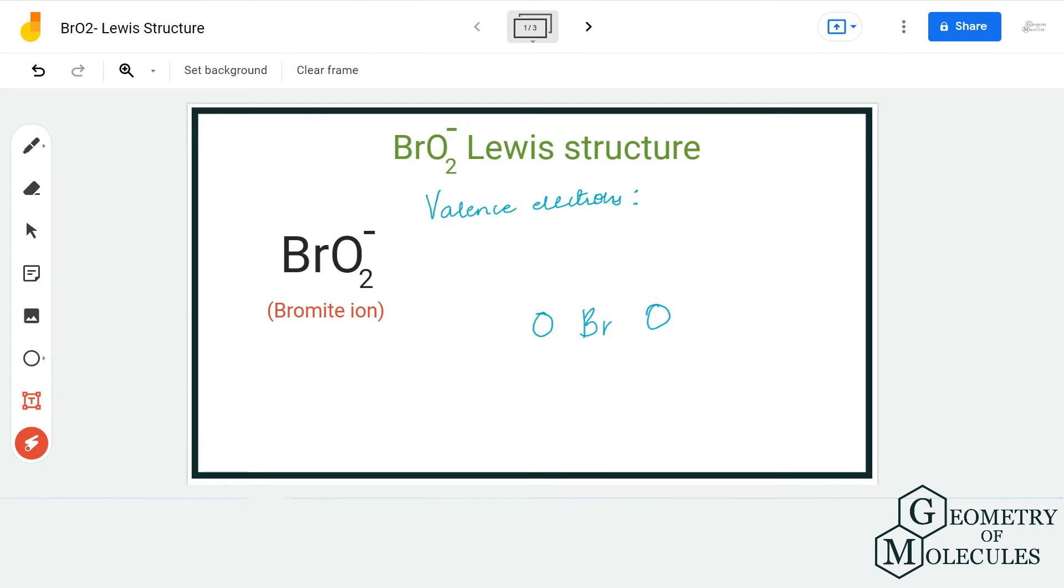Hi guys, welcome back to our channel. In today's video, we are going to do the Lewis structure for BrO2 minus ion. It is a chemical formula for bromite ion and it comprises one bromine atom and two oxygen atoms with this additional electron over here.